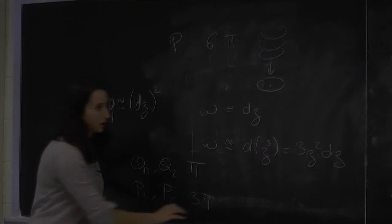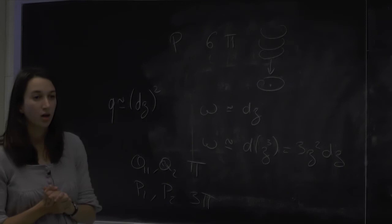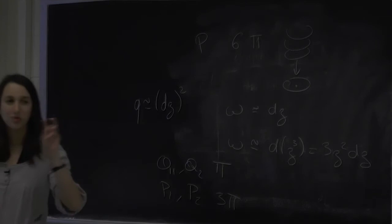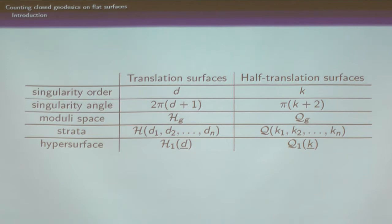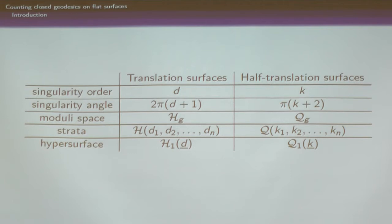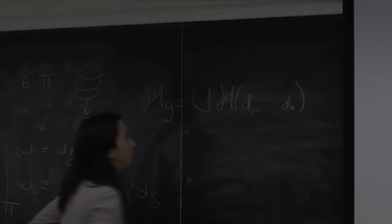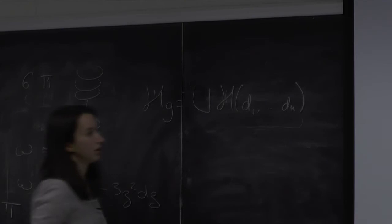Now I will introduce some notation. Poles are zeros of order −1. The singularity angles correspond to the singularity order of the differential by some formula. Let me introduce the set of all translation surfaces, that is the moduli space of abelian differentials, which I denote H(d). I do the same for half-translation surfaces. These moduli spaces are stratified by the singularity data. This is called a stratum of abelian differentials — a set of surfaces sharing the same singularity data.